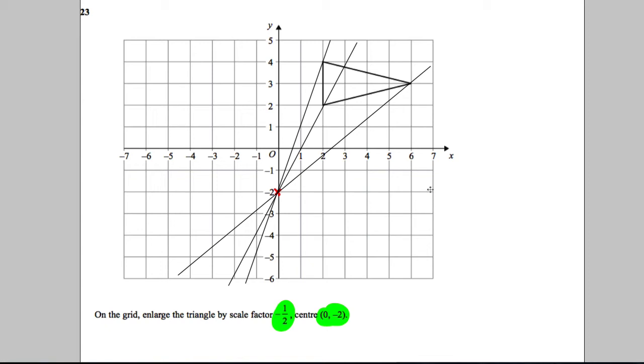What you need to do now is enlarge it by negative a half. What the negative means is the shape will be on this side of your center of enlargement.